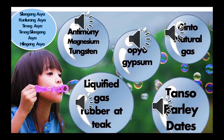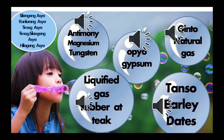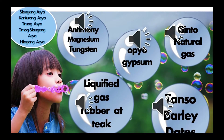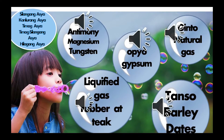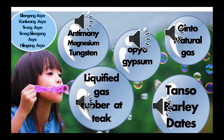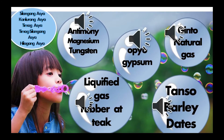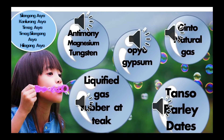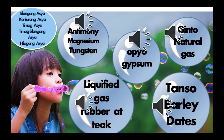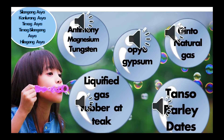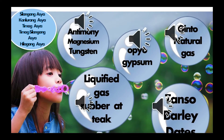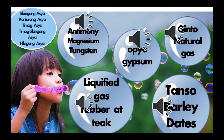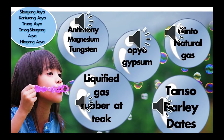Kung ang nabili mong lobo ay opio at gypsum, at ang sagot mo ay timog Asia — tama ka! Kung ang nabili mong lobo ay ginto at natural gas, at ang sagot mo ay hilangang Asia — tama ka!